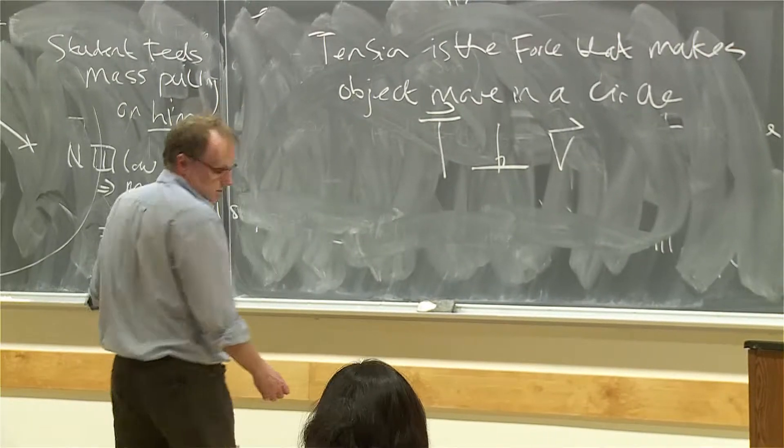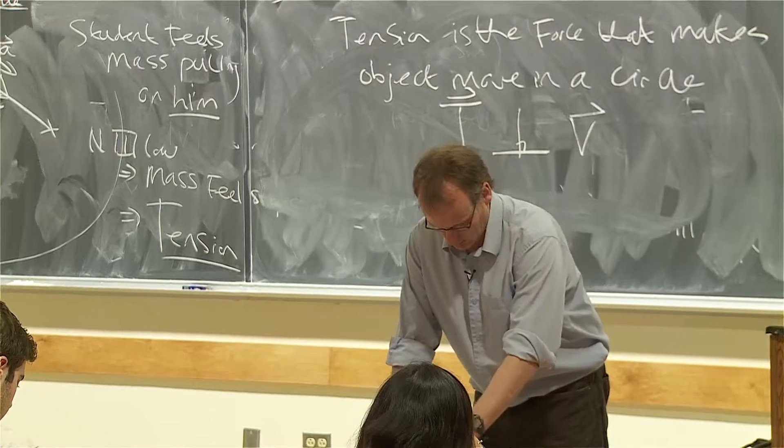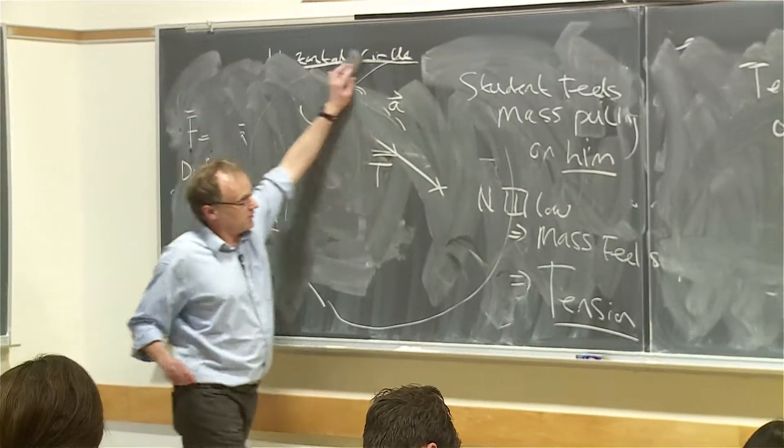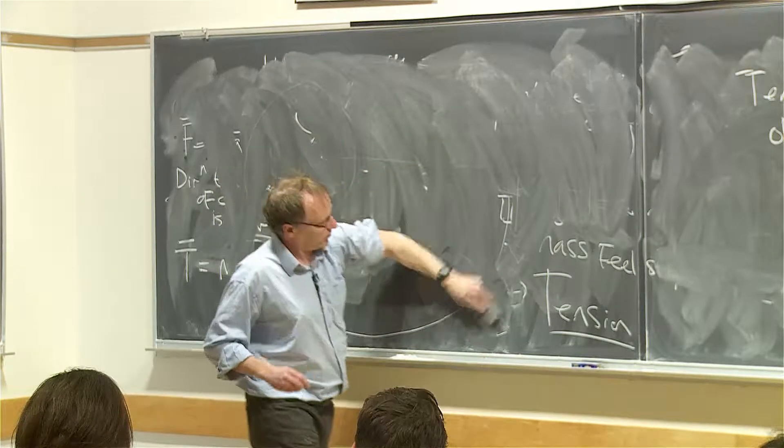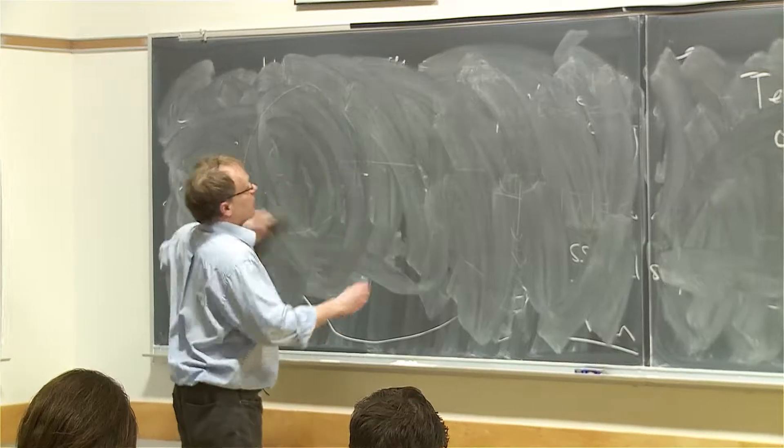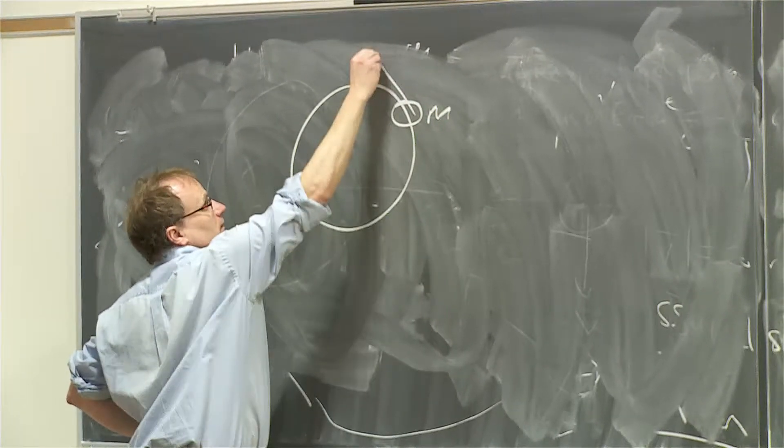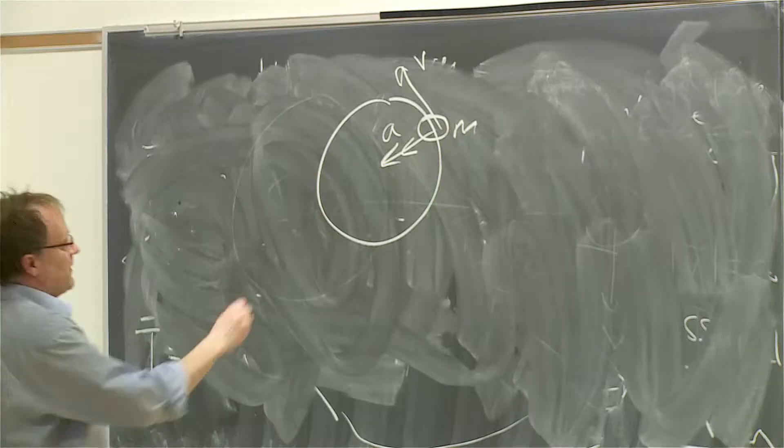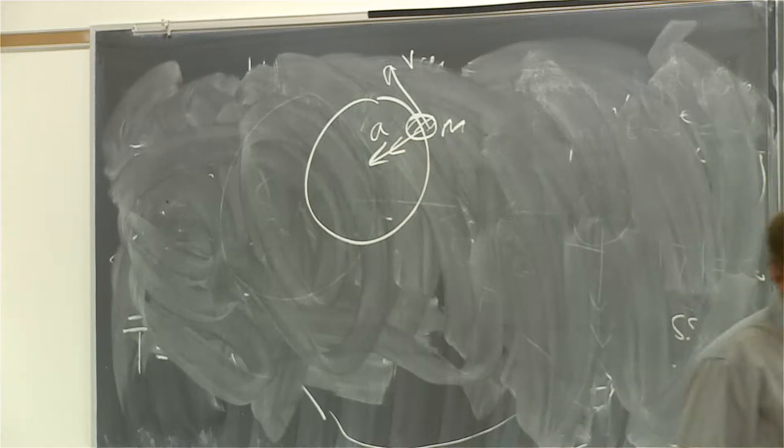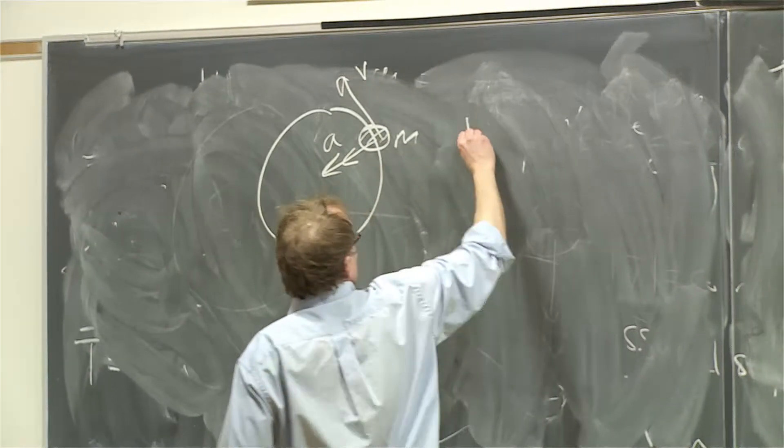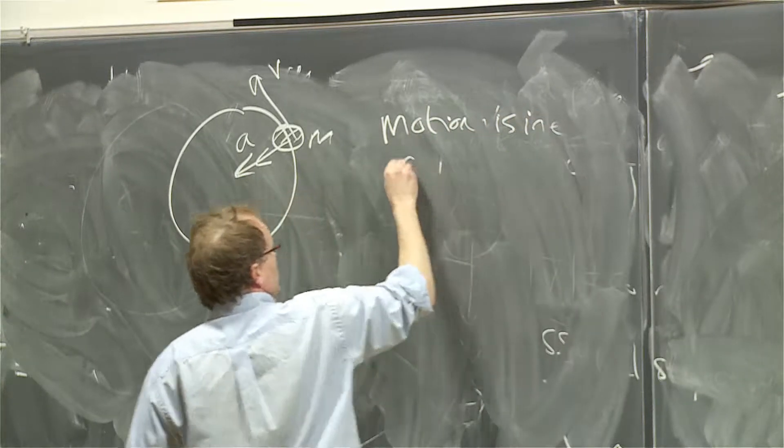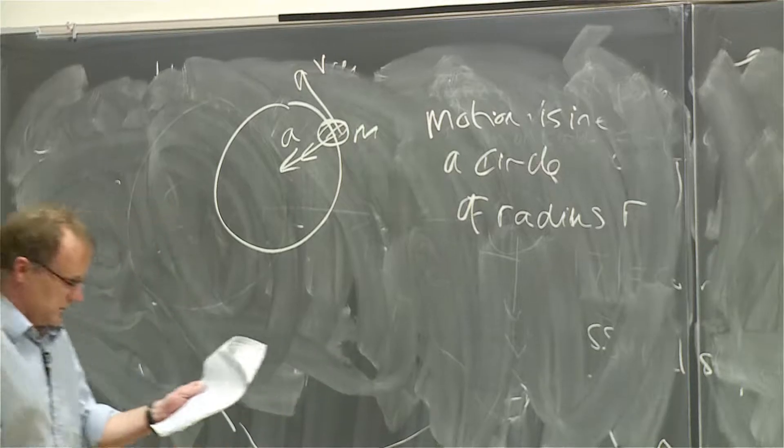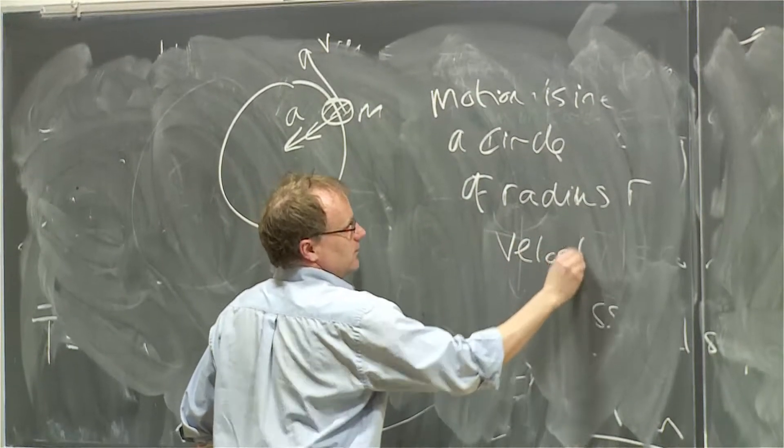So in a little bit of math, because I need to quantify this. So here's our object moving in a circle, M, velocity V, the acceleration is in this direction. Just moving in a circle, some mass. We need an equation for A.